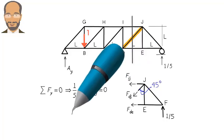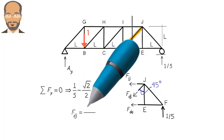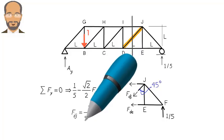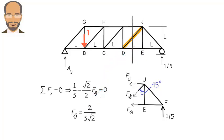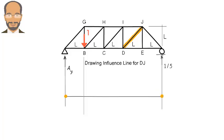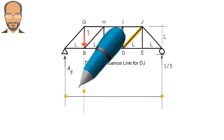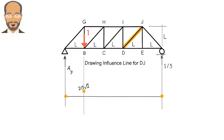Then solve for the force. This gives us FDJ equals 2 over 5 square root of 2. Now we plot the point on the line graph and connect these two points using a straight line.